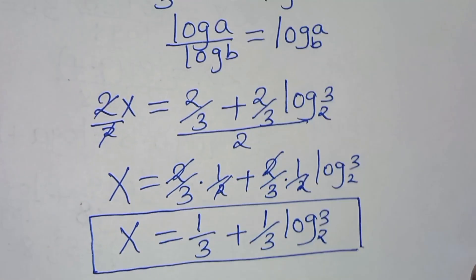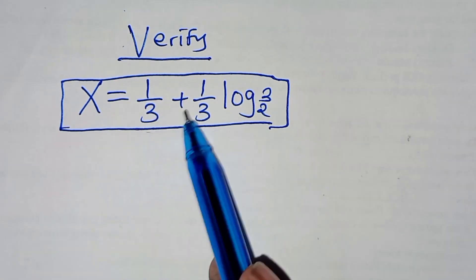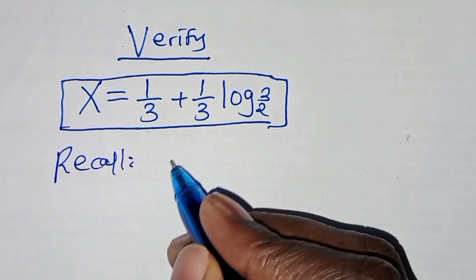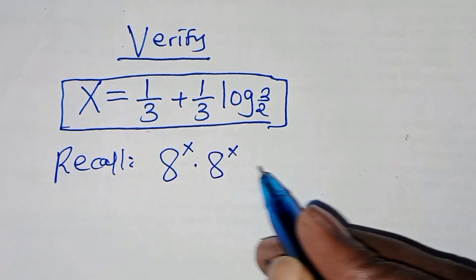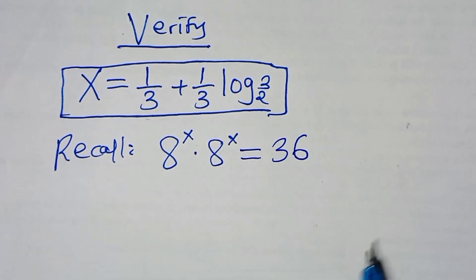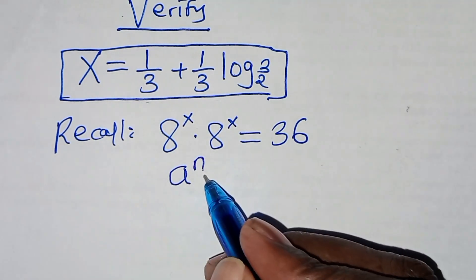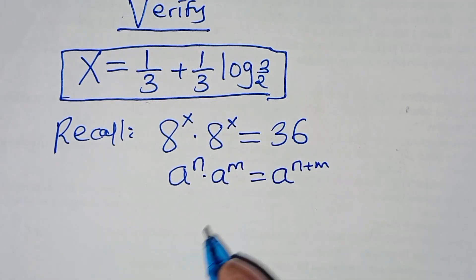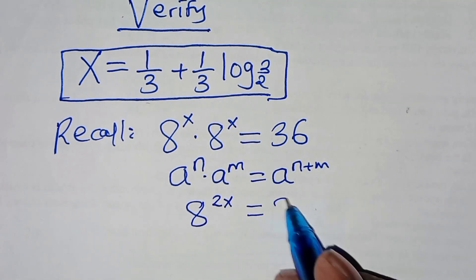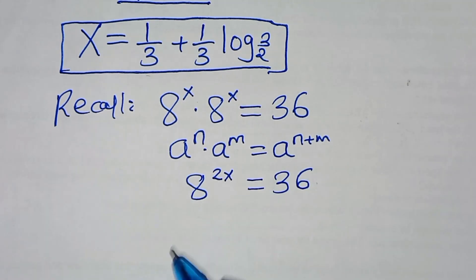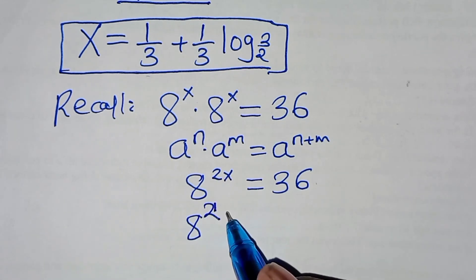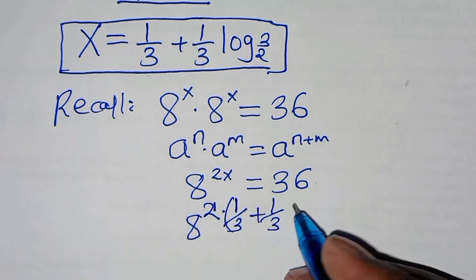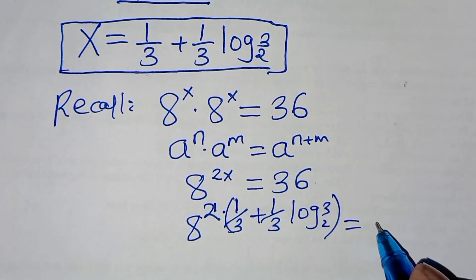Let's verify that x equals 1/3 plus (1/3)·log₂3 satisfies the original equation. Recall we need 8^x times 8^x to equal 36, which simplifies to 8^(2x) equals 36. Substituting the value of x, we get 8 raised to the power 2 times (1/3 plus (1/3)·log₂3), and this should give us 36.